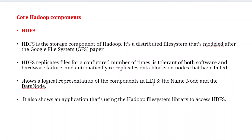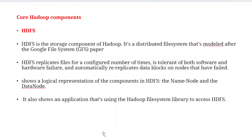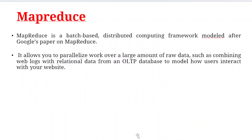In HDFS, every component has a NameNode and DataNodes. The NameNode is completely responsible for storing only the metadata information — when files were created, their origin, who created them, timestamps, dates, properties, and size. The actual data is completely stored in the DataNodes. It is also an application used by the Hadoop file system library to access HDFS.